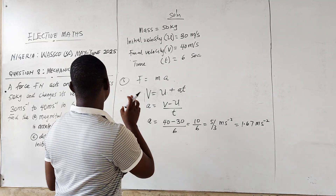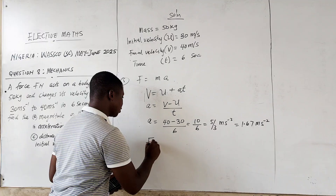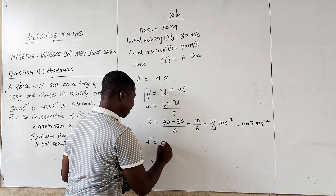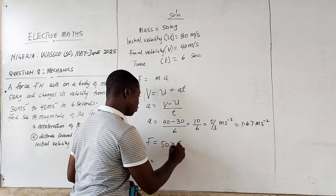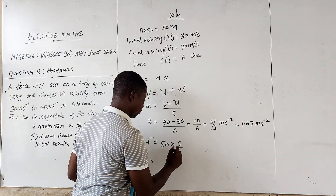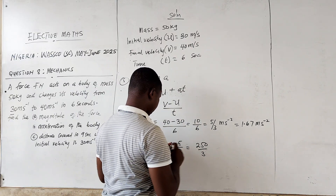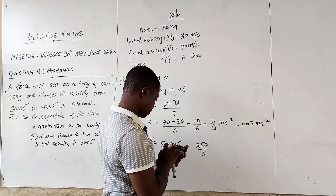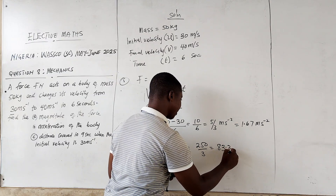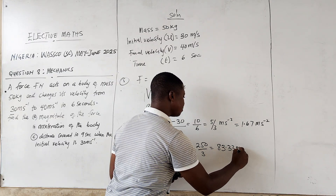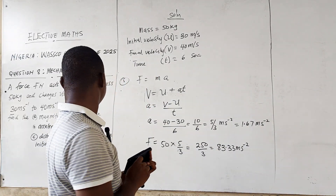With the acceleration found, we can now find the force. Force F = m × a = 50 × (5/3) = 250/3 = 83.33 N. That is the answer for part (a).